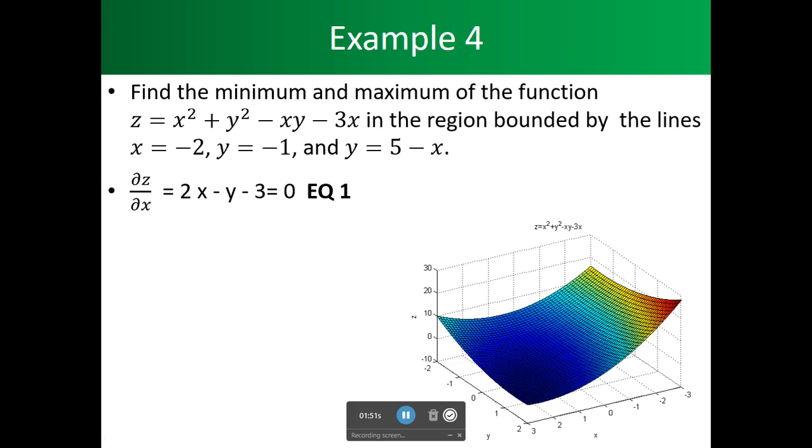Our first equation is we're going to take the partial of z with respect to x. We're going to be looking at 2x. We see here that if we take the derivative of x, we get 2x minus y minus 3 equals 0.